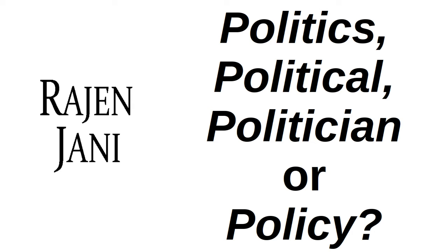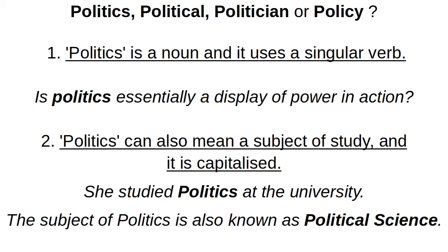Politics is a noun and it means activities that attempt to influence how something should be done or is to be done. It uses a singular verb. For example, is politics essentially a display of power in action? So here politics is a noun, it is used as a noun.